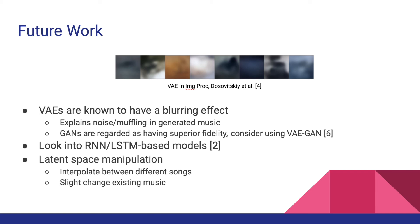We can consider a couple of next steps. As you can see in the figure, where people adapt VAEs in image processing, VAEs are known to blur the object — this also explains our result, why we got music with noise. Therefore, we can consider using GAN, the Generative Adversarial Network, which sharpens the result. We can use a VAE-GAN to sharpen the music with the GAN after the VAE produces a blurry result.